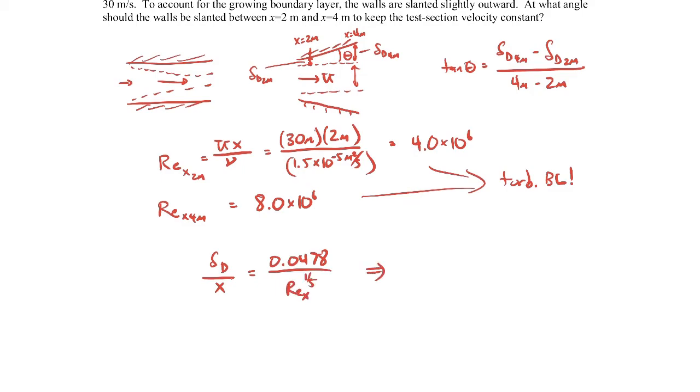So if you use that expression and you calculate out the displacement thickness at 2 meters, it'll come out to be 4.6 millimeters. And the displacement thickness at 4 meters comes out to be 8 millimeters.